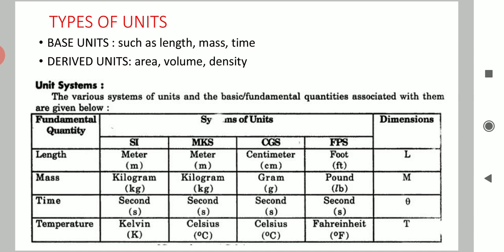We need to discuss many different types of units because in various countries units are not the same. For example, in India we use meter as a unit of land, but in European countries they will not use meter or centimeter — instead they will use foot or inches for the measurement of land. Similarly, for mass, in India we use kilogram or gram, but in European countries they measure it in pounds.